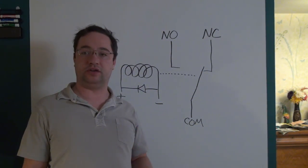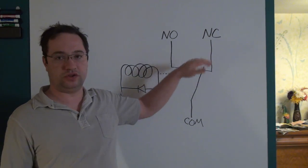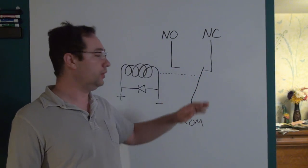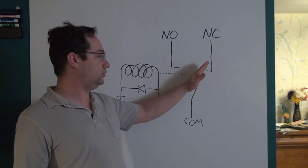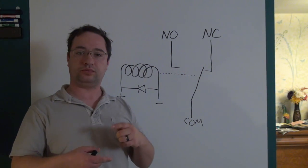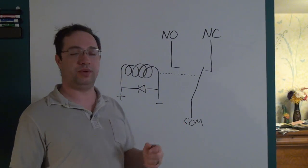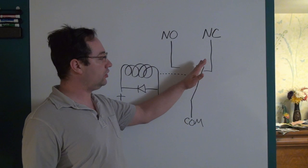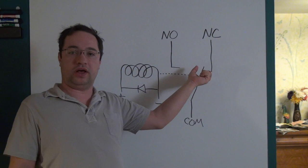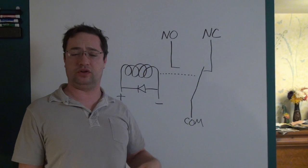For an inductive load like a motor, if your contact is normally closed and your motor is on and you energize the relay to shut off the motor, the inductive properties of the motor want to keep the current flowing. So as the arm starts to move away, you draw an arc, and that arc will last longer than that of a resistive load — which is generally bad.